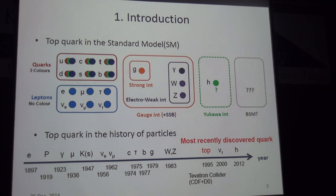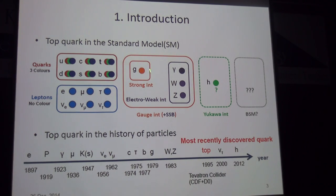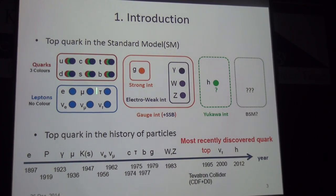Let me briefly review what the top quark is. The top quark is an up-type quark in the third generation. It has color charge and can couple to the gluon through a strong interaction. The top quark also has interactions with weak gauge bosons like W and Z, and even with the electromagnetic gauge boson gamma. We don't know the exact number of Higgs particles, but so far we know of one Higgs boson discovered at the LHC. According to the standard model, the Higgs should couple to the top quark strongly because its coupling constant is proportional to the top quark mass.